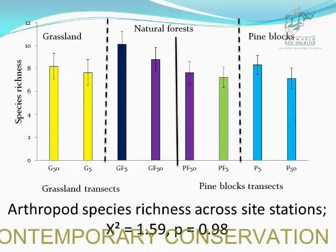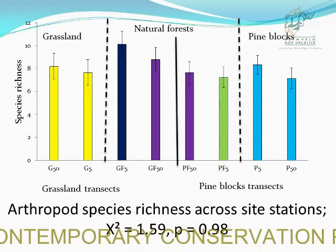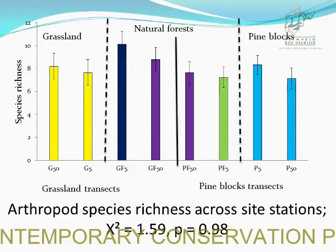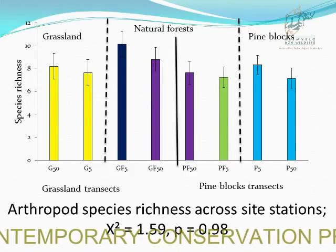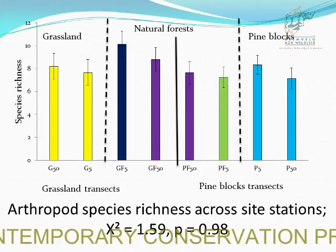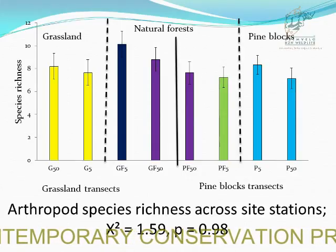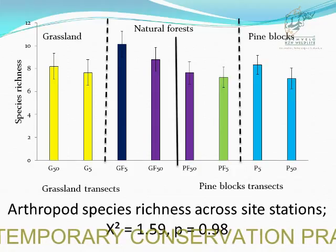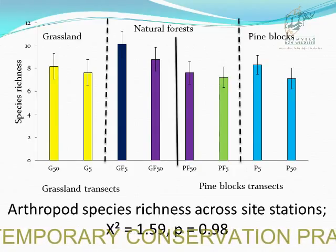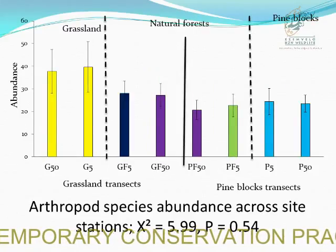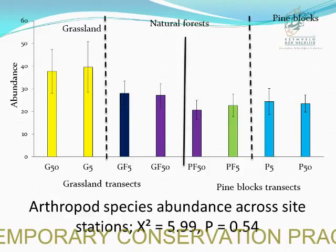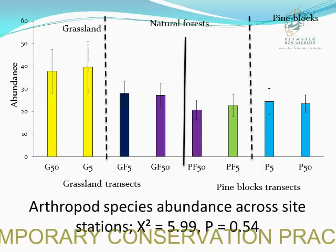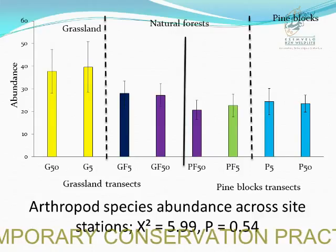We performed a chi-square test to assess the effect of site stations on species richness, and the test indicated no significant differences. However, we found the highest species richness in the natural forest edge adjacent to grassland, followed by the natural forest interior adjacent to grassland. The lowest was observed in pine plantation interior. A similar test for abundance also found no significant differences, but the highest abundance was in grassland stations and the lowest in natural forest adjacent to pine plantation.